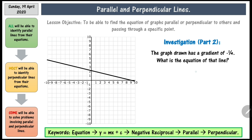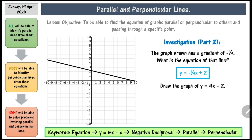The graph drawn has a gradient of negative one-quarter. What is the equation of that line? If the gradient is given to you, all you need to do is find the y-intercept, and as you can see, it is positive 2. Therefore, the equation of this line is y equals negative one-quarter x plus 2. It then goes on to say: draw the graph of y equals 4x minus 2. Just do it from negative 3 to 3 so that it crosses the y-axis and you can tell whether it is a perpendicular line or not.